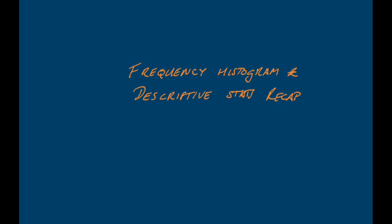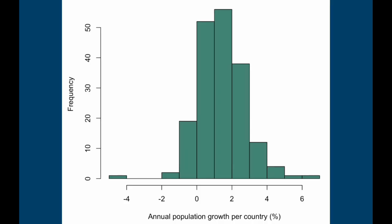Let's quickly look at a frequency distribution. This distribution here is the annual population growth per country for almost all of the countries in the world from 2014. These are data published by the World Bank, and you can see that it's certainly at least approximately normally distributed — it's roughly bell-shaped and symmetrical about the center.